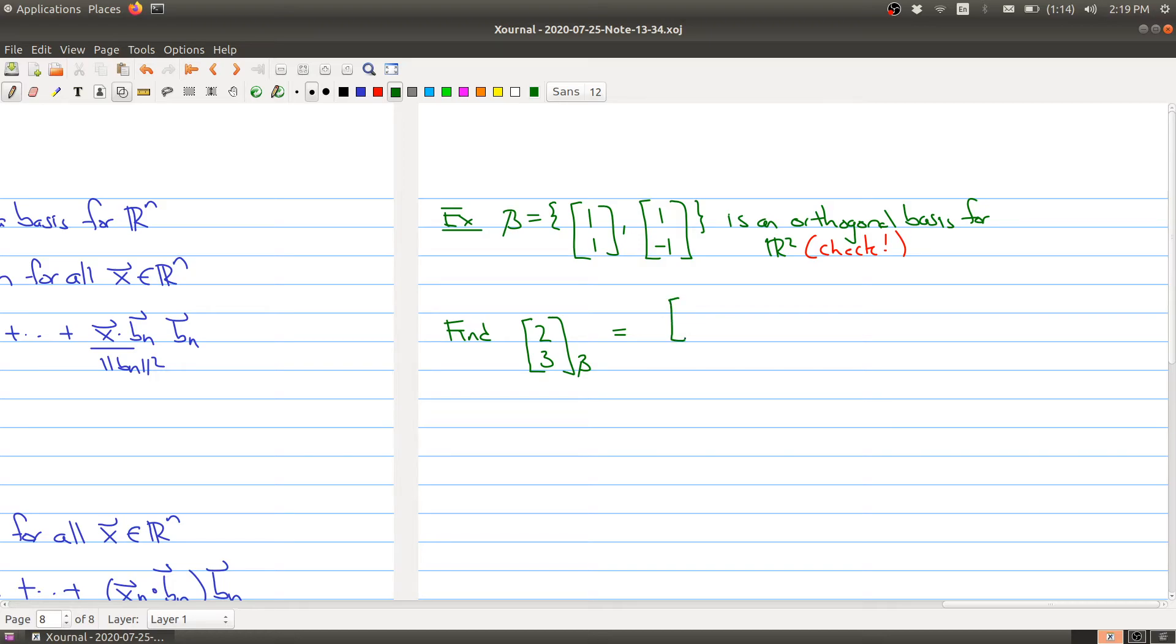So I would need to do the vector (2,3) dotted with the first vector (1,1) divided by the length of (1,1) squared, and then times it by that vector (1,1). Plus the vector (2,3) dotted with the second vector (1,-1), and then I have to divide it by the length of the second vector squared, and then times it by that vector (1,-1). Let's clean this all up. The numerator here is 5, and downstairs I have a square root and a square—they cancel. So this just gives me 2 times (1,1).